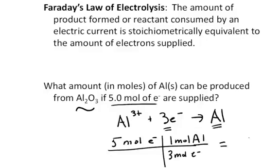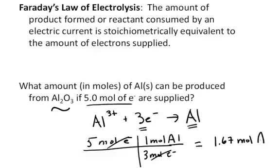And I do the math and the moles of electrons cancel, and I end up with about 1.67 moles of aluminum formed from the 5 moles of electrons supplied. Now it's pretty darn near impossible to count electrons, much less moles of electrons.